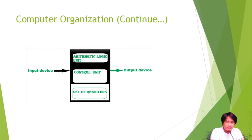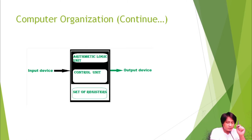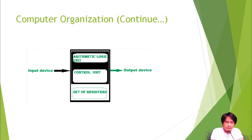Examples of input devices are devices that give instructions or information to the computer — for example, a keyboard, a mouse, a microphone, a webcam, and a digital pen. Examples of output devices include the computer monitor, speakers, and printer. Before the computer displays output on your monitor, it must first receive input.